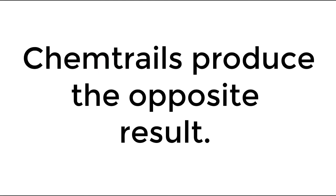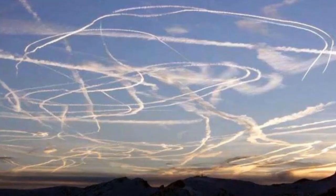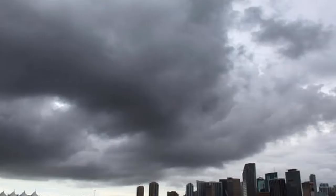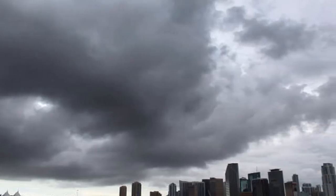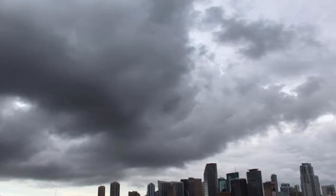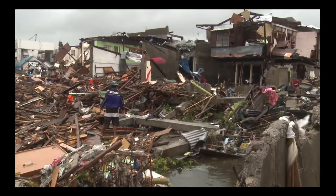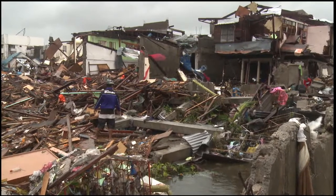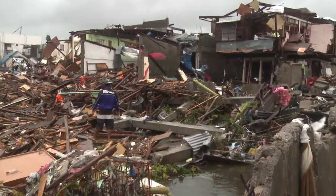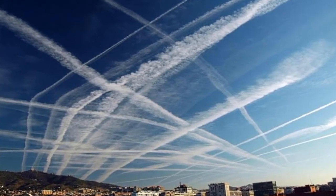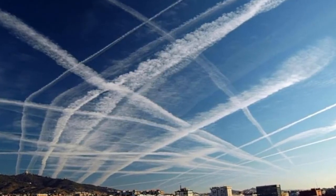Chemtrails, on the other hand, produce the opposite result. While chemtrails do create clouds, they are high-altitude clouds with an unnatural repeated pattern. Chemtrails can eliminate the same low-altitude clouds that are required for cloud seeding, consequently warming the atmosphere and the ground. While the use of cloud seeding techniques is in most cases used to help ease the unpredictability and damage caused by natural disasters, it is unclear as to what purpose, if any, the spraying of high-altitude chemtrails serves.